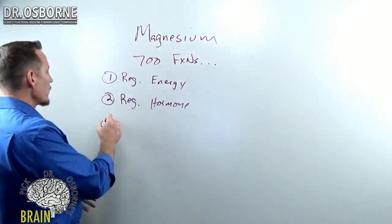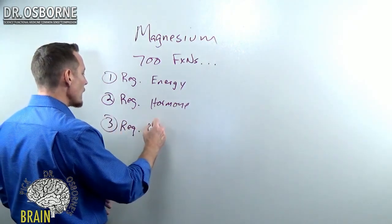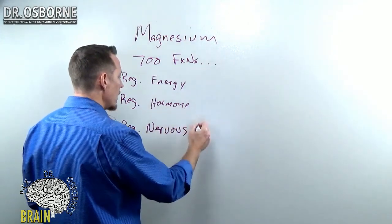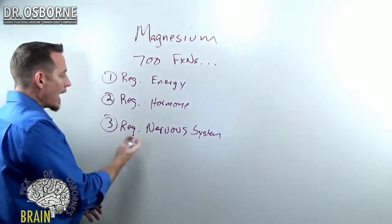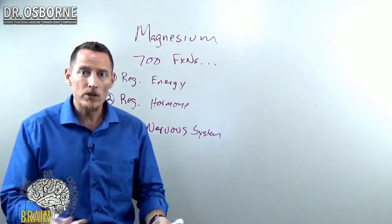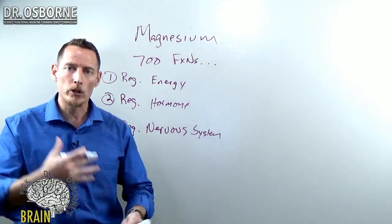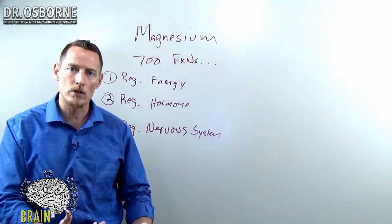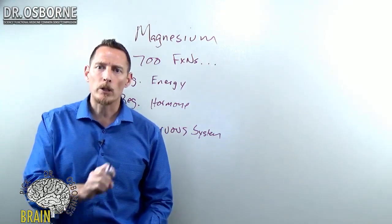Now magnesium also regulates the nervous system. I like to call magnesium the lost electrolyte, not because it was ever lost, but because so many people don't realize that it is actually an electrolyte. And what is an electrolyte? It's something that helps the electrical conductivity of your body work. Well, your brain's an electrical system, your nervous system is electrical, and it requires magnesium to properly work.